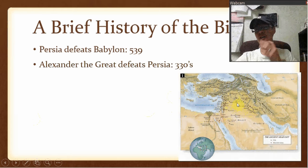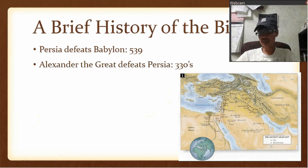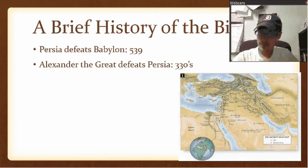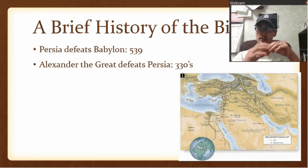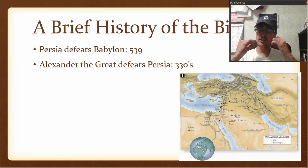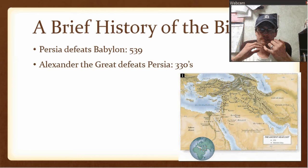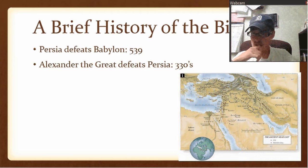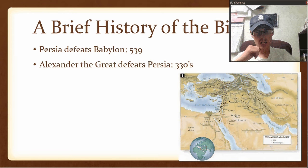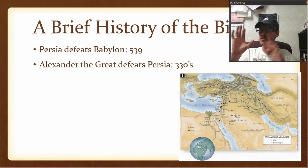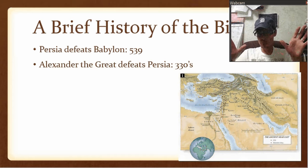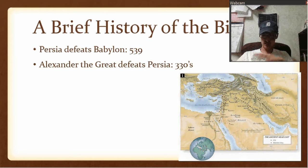The book of Esther happens in between these migrations — she saves her people, who are in the Persian capital area, from mass genocide.